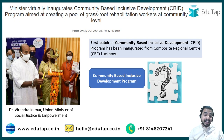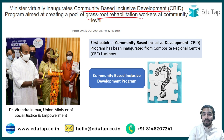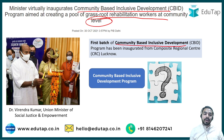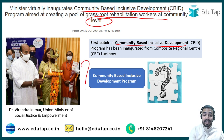Here is the headline from the PIB news: the minister virtually inaugurates the community-based inclusive development program, which aims to create a pool of grassroot-level rehabilitation workers at the community level. The first batch of the community-based inclusive development program has been launched by Dr. Virendra Kumar, who is the Union Minister of Social Justice and Empowerment.